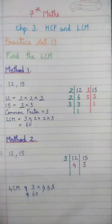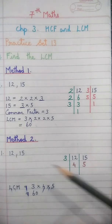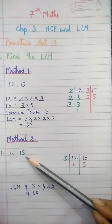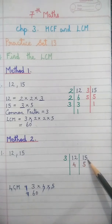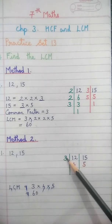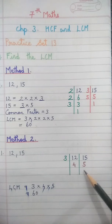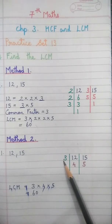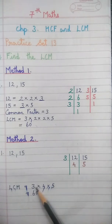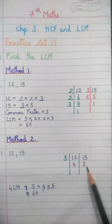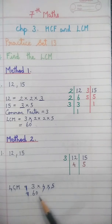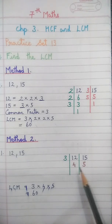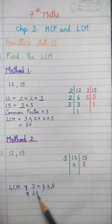Method 2: again with 12 and 15. We take them together — 3 fours are 12, 3 fives are 15. LCM is equal to the number on the left side column into the bottom row: 3 into 4 into 5 is 60. By this second method, we take the two numbers together to factorize and find the LCM.